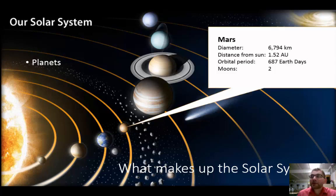The next planet is Mars. Mars's diameter is 6,794 kilometers. Its distance from the sun is 1.52 astronomical units. It has an orbital period of 687 Earth days and it has two moons. These are the first four planets, also known as the terrestrial planets.